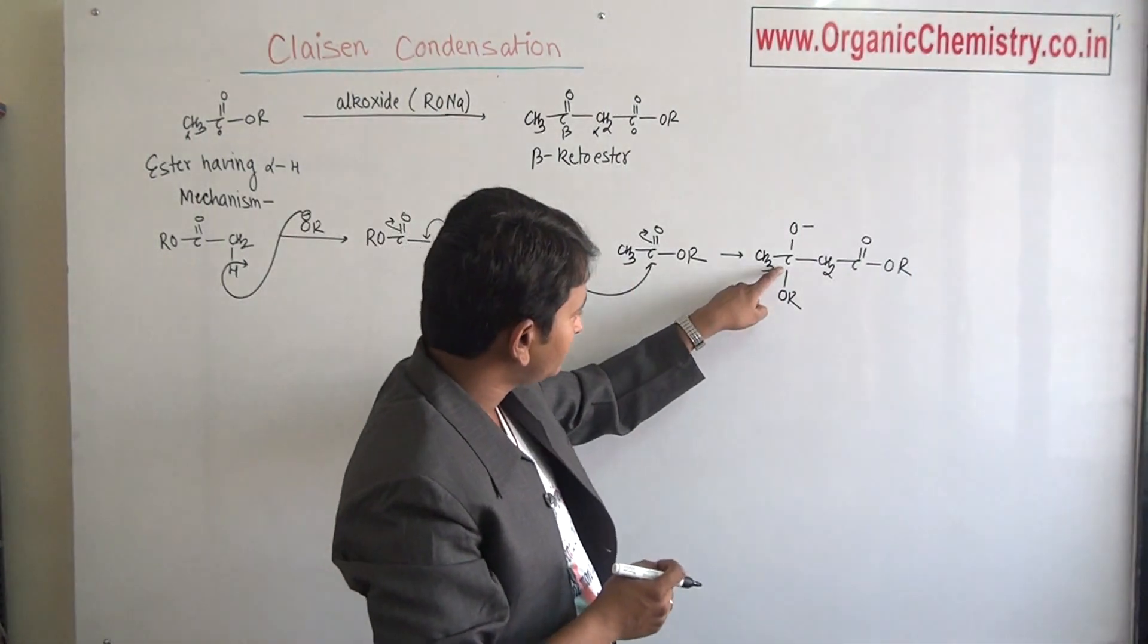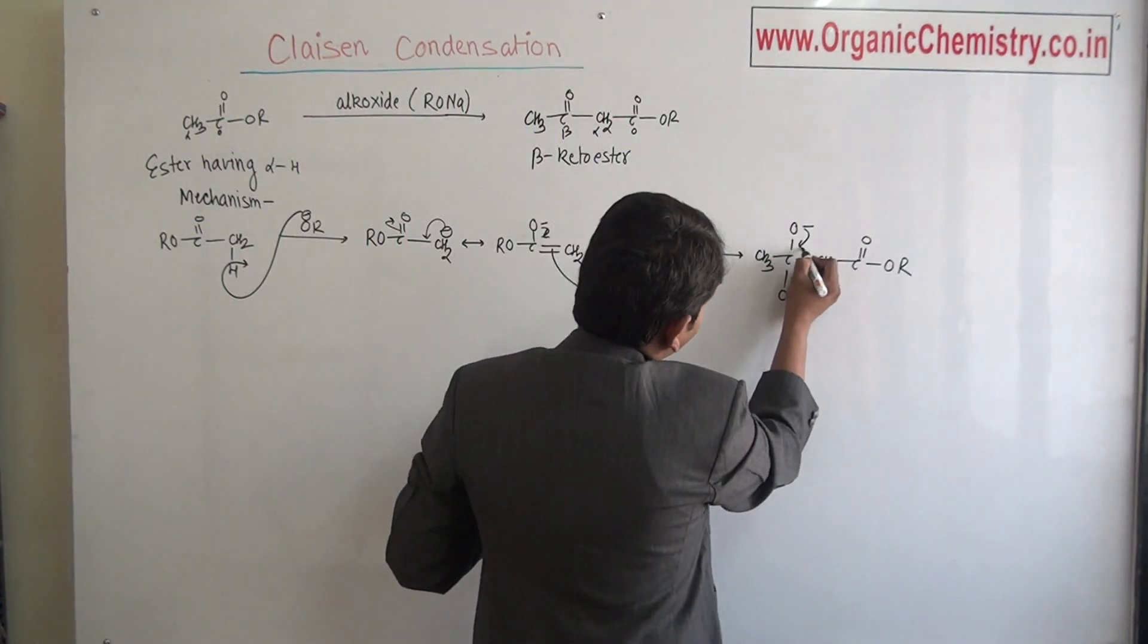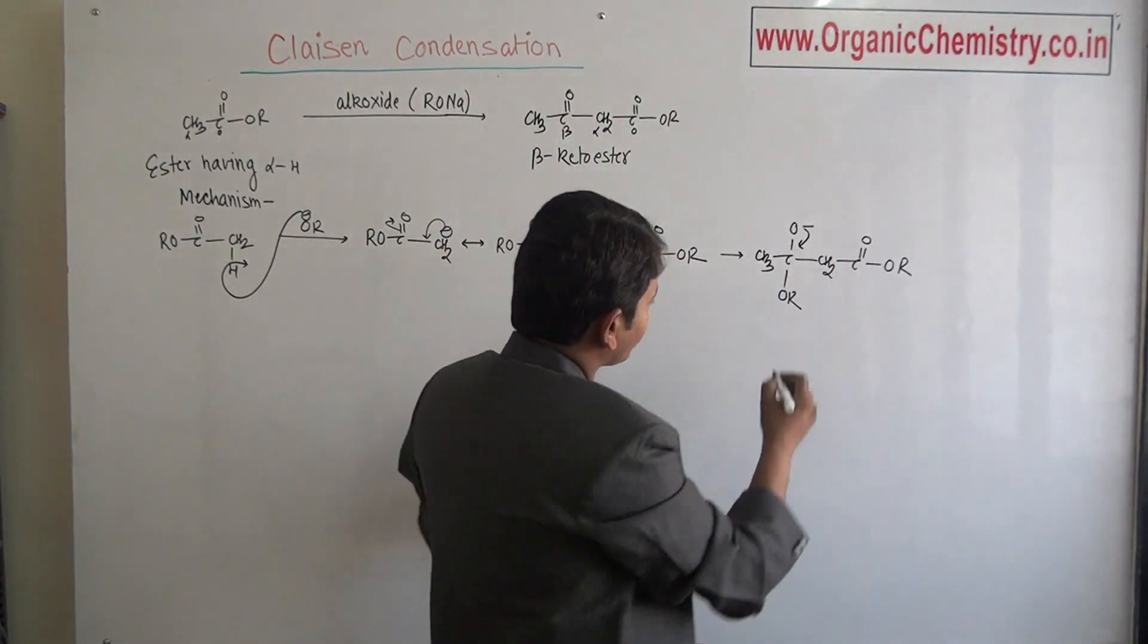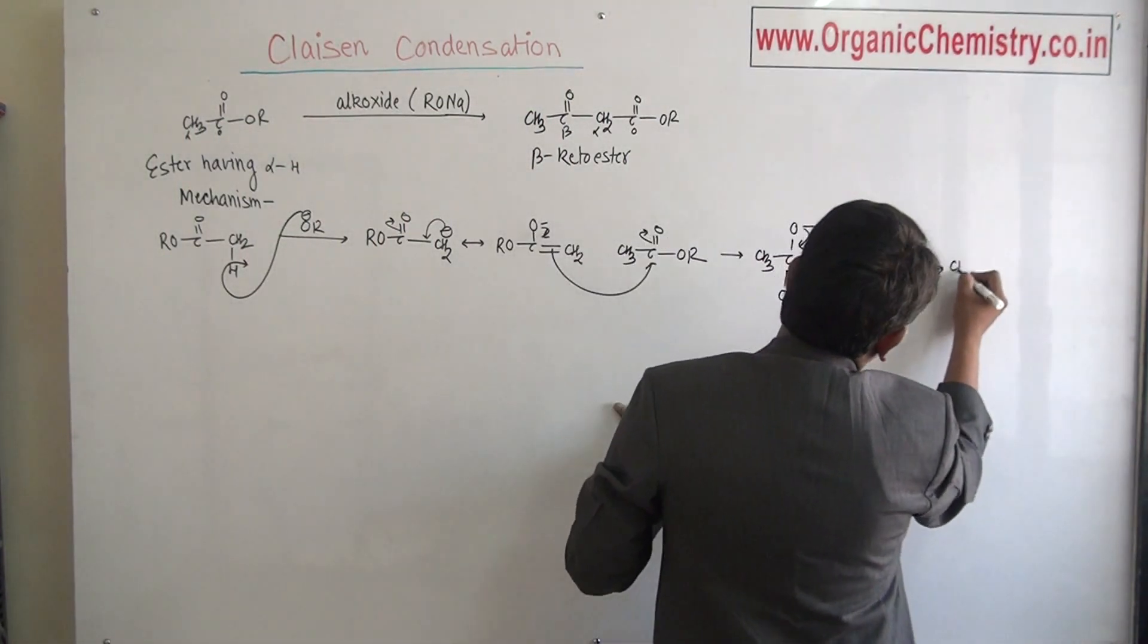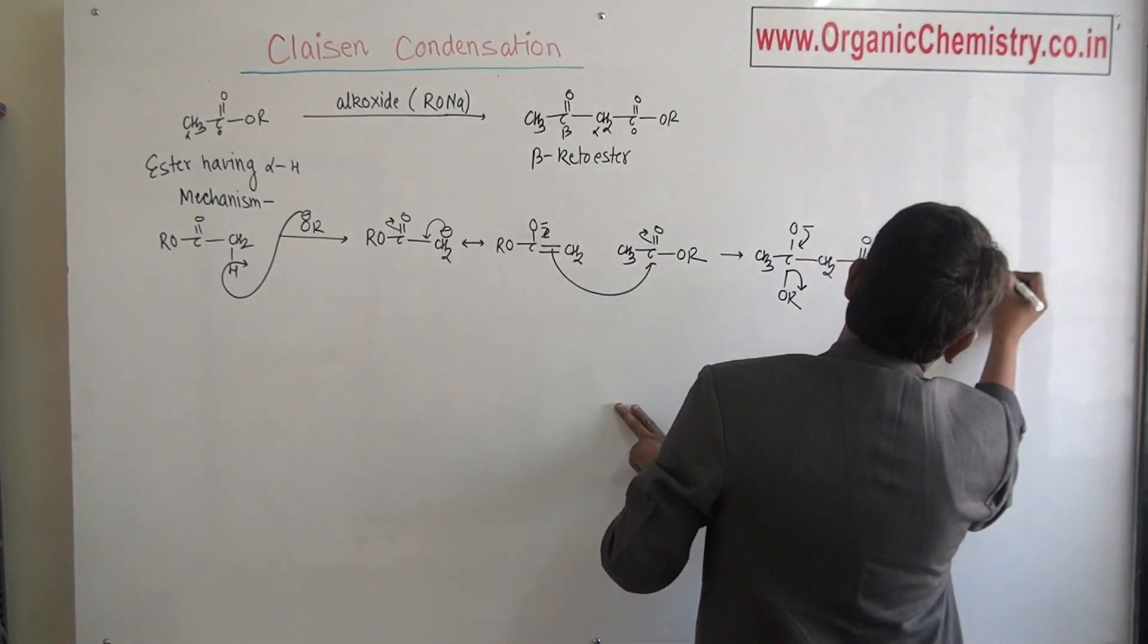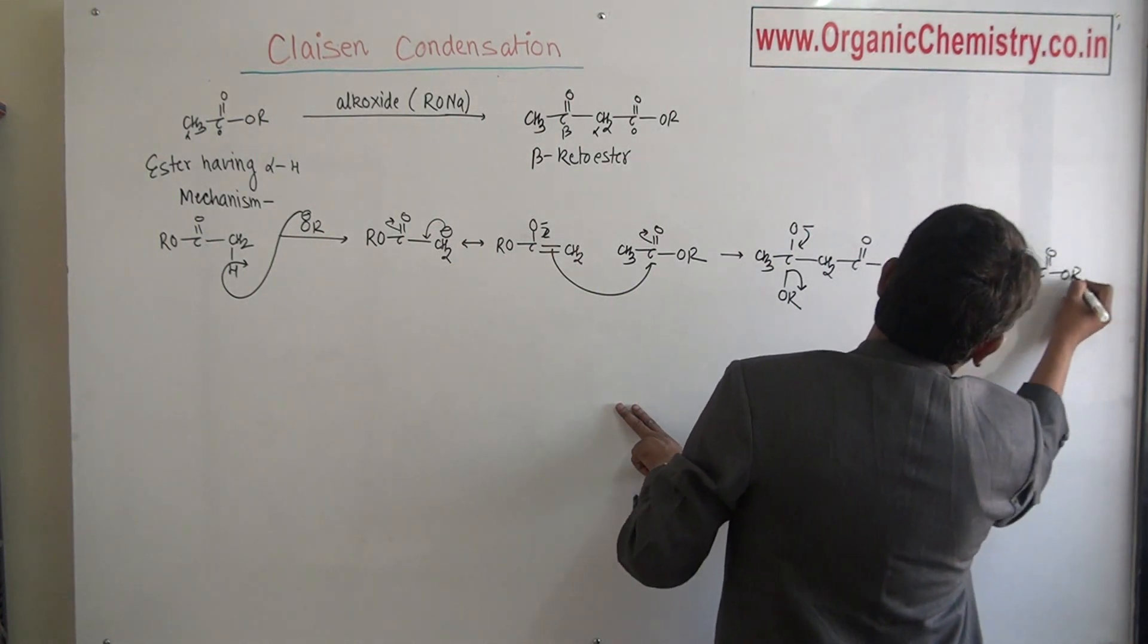At this particular carbon, two electron negative atoms are there. So when this O negative makes a bond with this carbon, this OR goes out. And final product will be CH3-C-O-CH2-C-O-O-R.